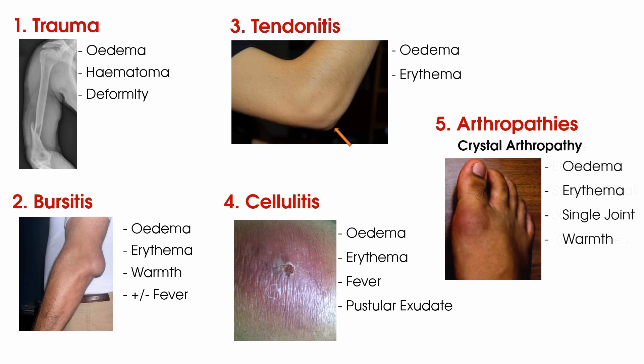Crystal arthropathies represent a group of conditions associated with a deposition of mineralised material, mimicking crystals within joints and surrounding tissues. Gout and pseudogout are some of the most recognisable forms. These conditions typically present in a single large joint with redness and swelling, and may well be warm to palpate.